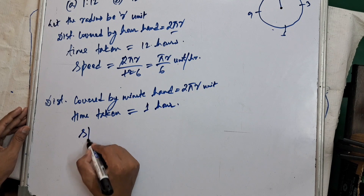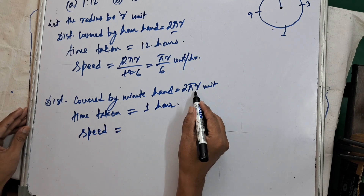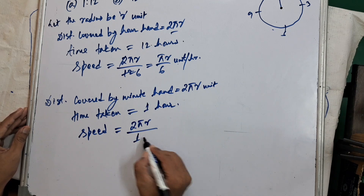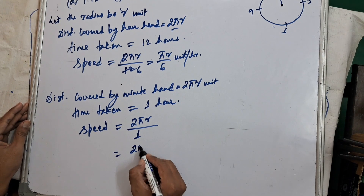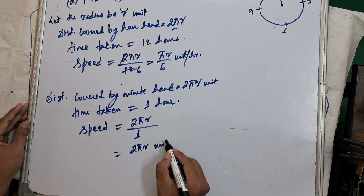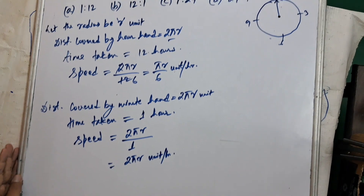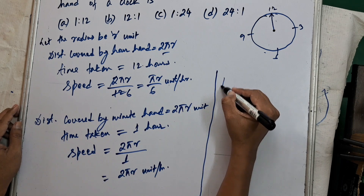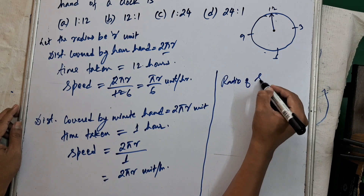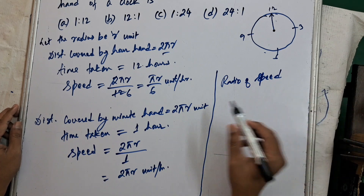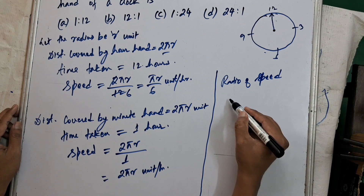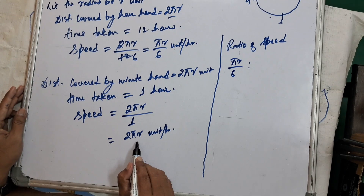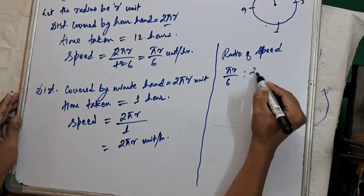The speed of the minute hand is given by distance upon time: 2πR divided by 1, which equals 2πR units per hour. Now we are asked to find the ratio of the speed of the hour hand to the speed of the minute hand.